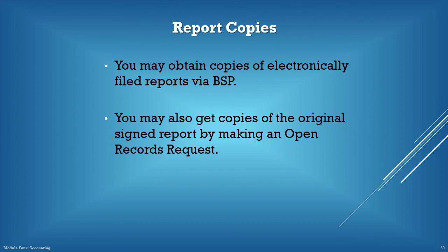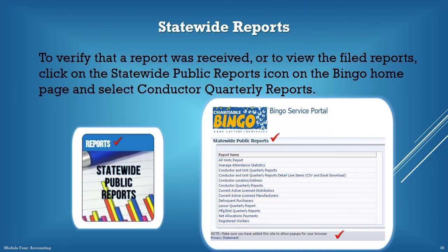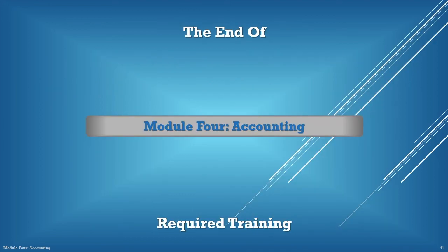To obtain a copy of a filed quarterly report, the information can be accessed via the BSP. An organization can select the Organization Information tab, and units can select the Unit Organization Information tab. The statewide public reports are available through the link on the Bingo website or through the BSP, providing a list of available Bingo reports that can be tailored by specific search criteria. Ensure that the browser allows pop-ups or some content may not launch or be visible. This completes Module 4, Accounting.